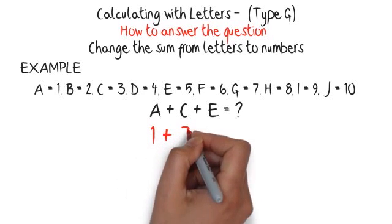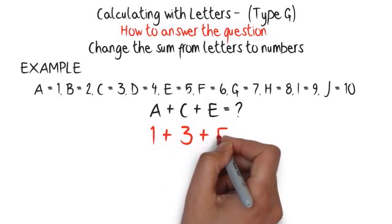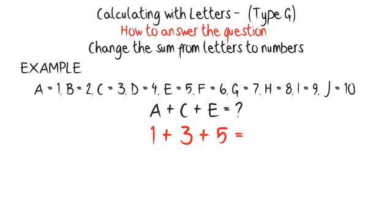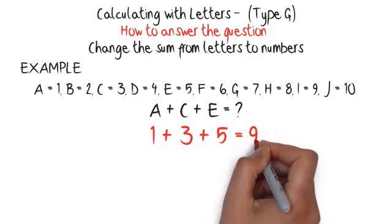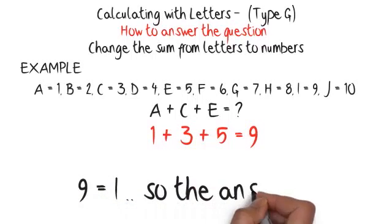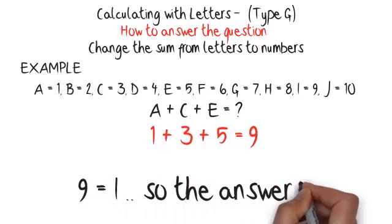First, change the letters into numbers: 1 plus 3 plus 5. Now answer the sum: 1 plus 3 plus 5 equals 9. The answer 9 now needs to be changed back to a letter. 9 equals i, so the answer is i.